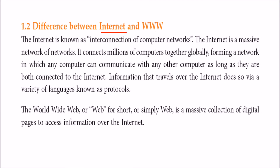What is the difference between the internet and the WWW? The internet is a massive interconnection of computer networks and computing devices containing millions of computers that form a way to communicate. Information travels through the internet via a variety of protocols or rules. The WWW, or web, is simply a massive collection of digital HTML pages used to access information over the internet.